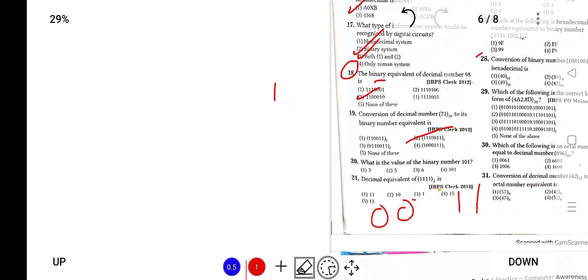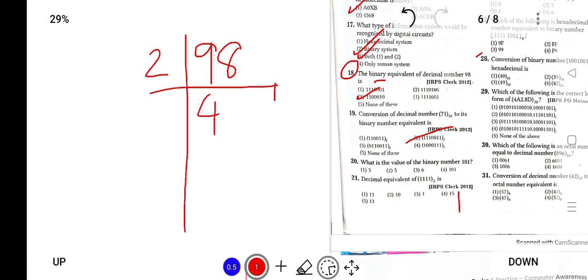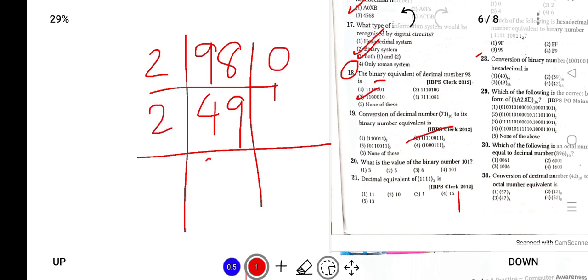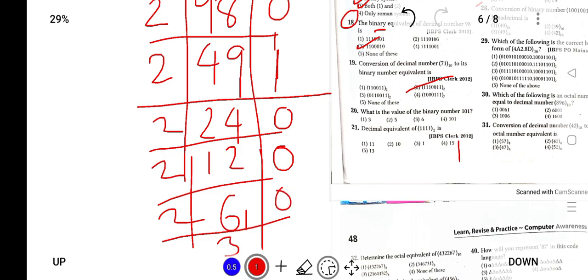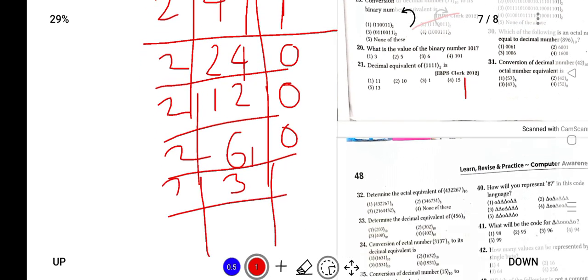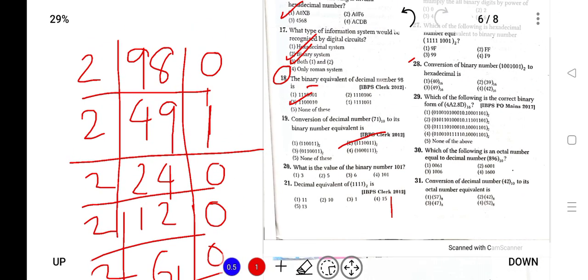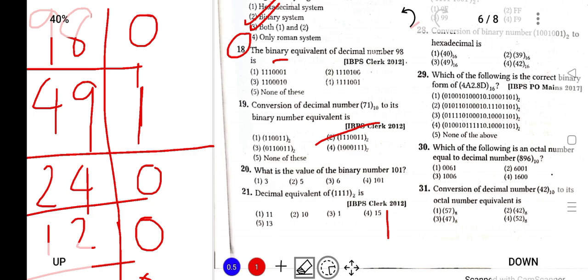Correcting the conversion of 98: 98 divided by 2 — remainder 0; 49 divided by 2 — remainder 1; 24 divided by 2 — remainder 0; 12 divided by 2 — remainder 0; 6 divided by 2 — remainder 0; 3 divided by 2 — remainder 1; 1 divided by 2 — remainder 1. Reading from bottom up, the answer is 1 1 0 0 0 1 0.